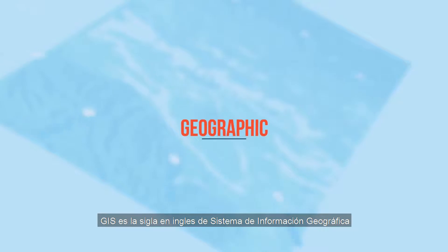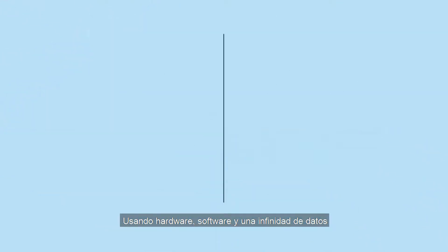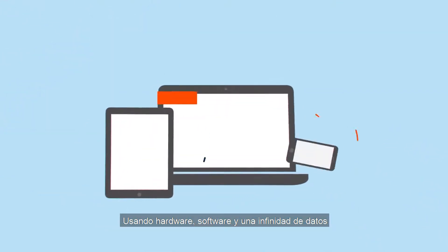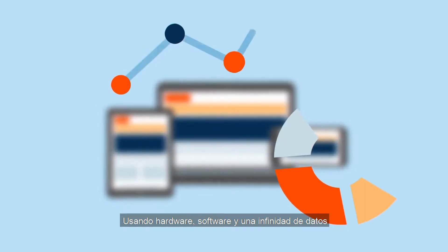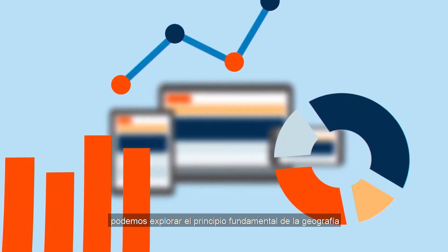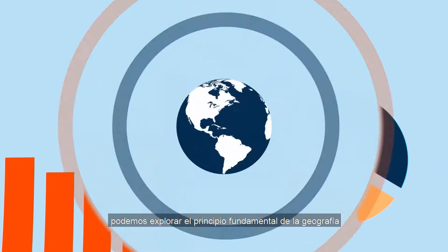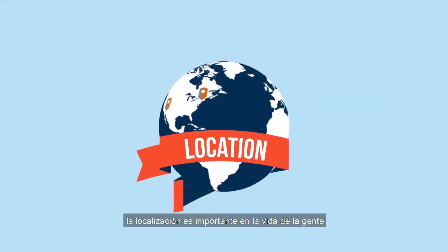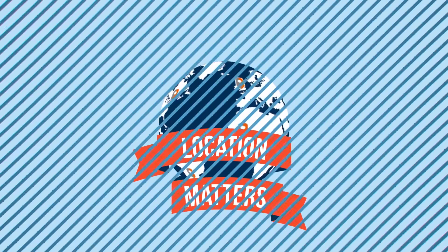GIS stands for Geographic Information System. Using computer hardware, software, and a ton of raw data, we can explore the fundamental principle of geography: that location is important in people's lives.